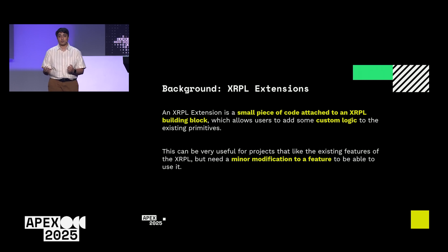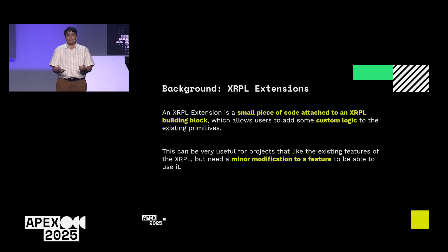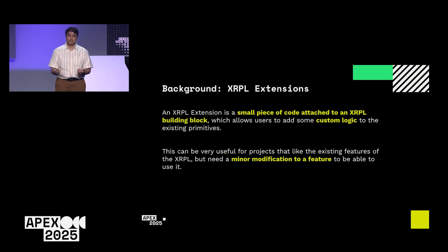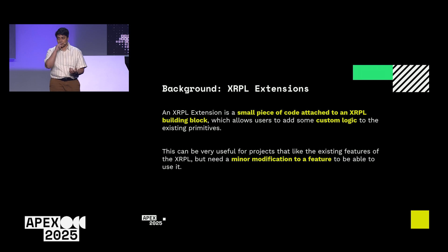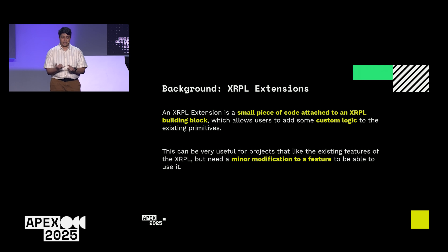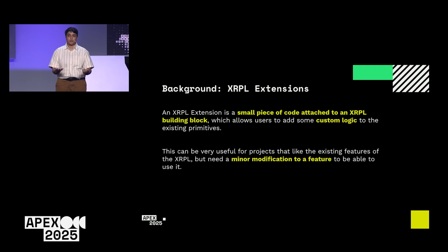An XRPL extension is a small piece of code that attaches to an XRPL building block, allowing users to add custom or business logic to existing XRPL primitives. This is very useful for projects that find the existing features of the XRPL great but need a minor modification for their use case. It's the best of both worlds — you get the benefits of existing building blocks: they're fast, efficient, well-designed, well-tested, and audited. You don't need to reinvent the wheel with, say, a smart contract.